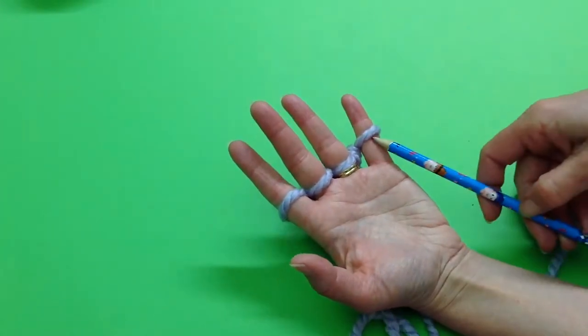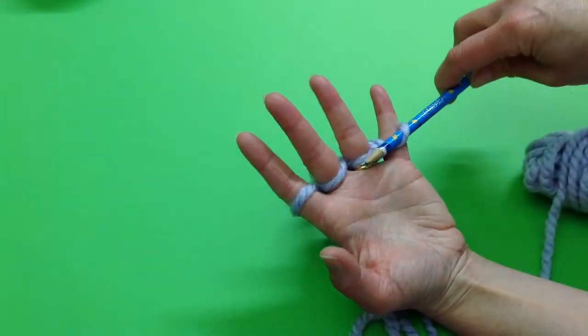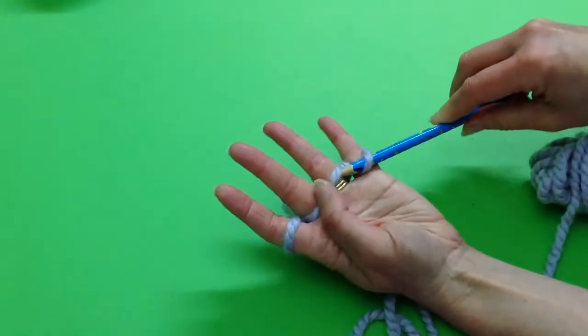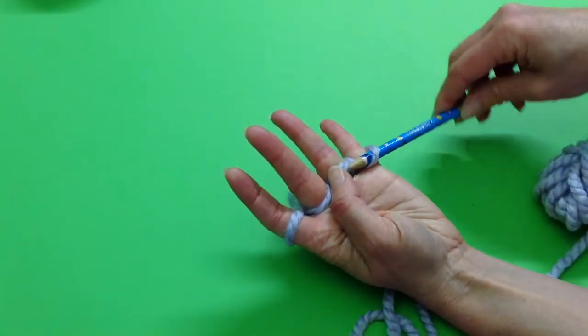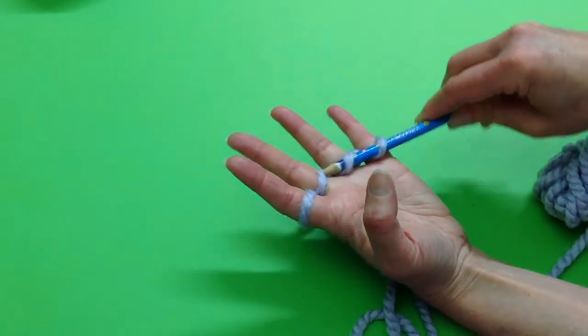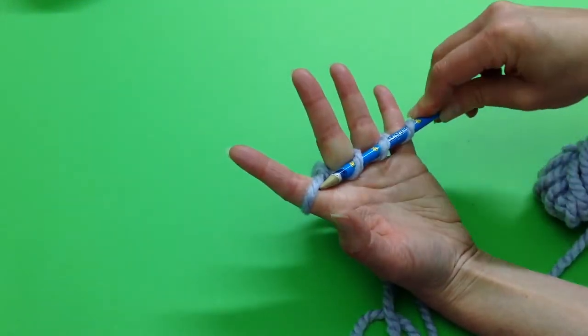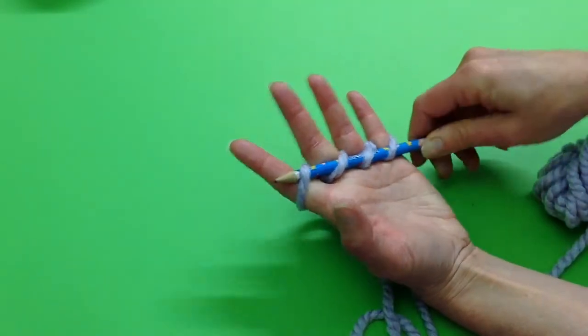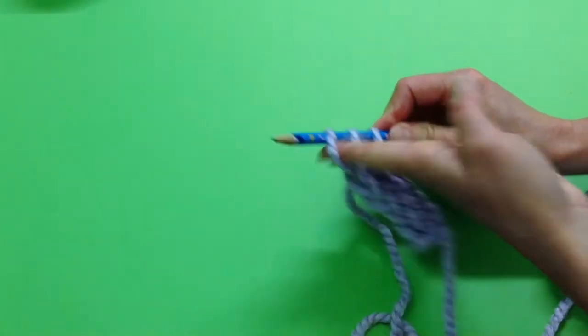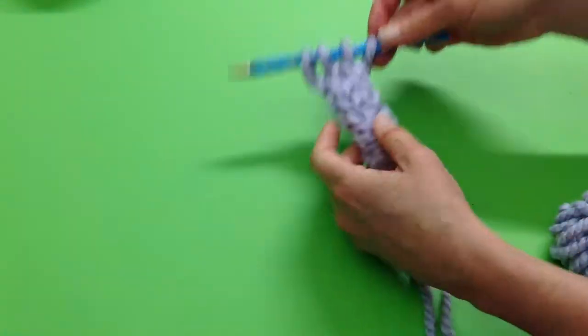...is grab a pencil or a chopstick or a crochet hook and slide the wool off onto the pencil. We go under and onto the pencil and then slide it off just like that.